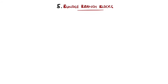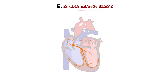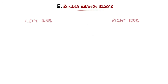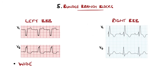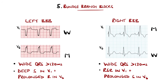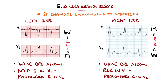Bundle branch blocks are another fairly common feature. These are described as left or right bundle branch blocks, with the left bundle branch splitting again into the anterior and posterior branches. These patterns feature wide QRS complexes beyond 120 milliseconds. Left bundle branch blocks feature a deep S wave in V1 and prolonged R wave in V6, giving a W and M shape respectively. Right bundle branch blocks have an RSR wave pattern in V1 and prolonged S wave in V6, giving M and W shapes respectively — an easy way to remember this is with the mnemonic William Marrow. Also remember that the ST segment is affected in bundle branch blocks, so interpreting ST changes requires specific criteria.